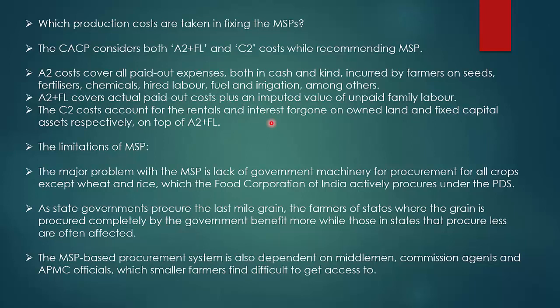A2 costs cover all paid-out expenses — both in cash and kind — incurred by farmers on seeds, fertilizers, chemicals, hired labour, fuel, and irrigation. A2+FL covers actual paid-out costs plus an imputed value of unpaid family labour. C2 costs account for the rental and interest foregone on owned land and fixed capital assets respectively, on top of A2+FL. A key challenge is the lack of government machinery for procurement for all crops except wheat and rice, which the Food Corporation of India actively procures under the PDS.